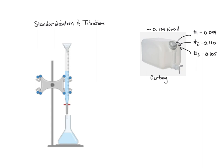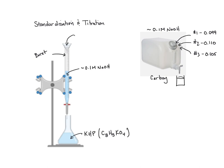So this carboy has some amount of sodium hydroxide liquid. We're going to take a quantity of that, put it in a beaker, and then put it in the burette. We think the burette contains 0.1 molar NaOH, but we don't know. So what we use is a solid acid called KHP — potassium hydrogen phthalate. The actual compound is C8H5KO4, and it weighs 204.2 grams per mole, so this is a big compound.